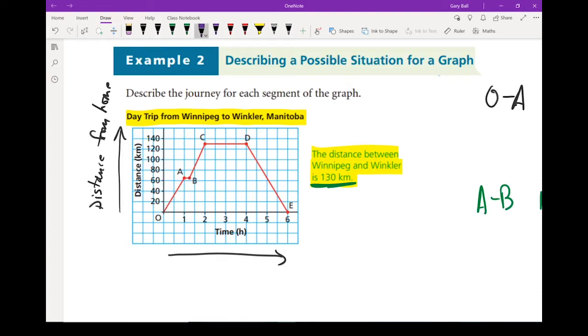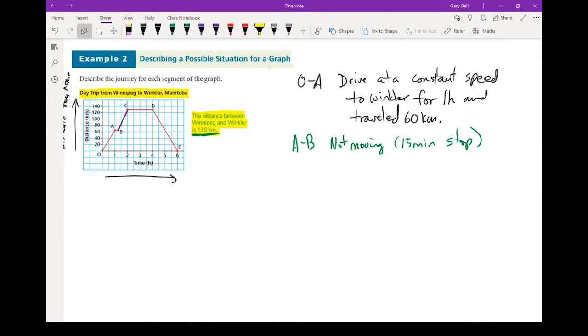The next part is from B to C. And if you'll notice, the distance is now changing again along with time. That must mean they're driving again. So from B to C, they continued traveling. And it looks like the rest of the way to Winkler. And they drove for about 45 minutes.